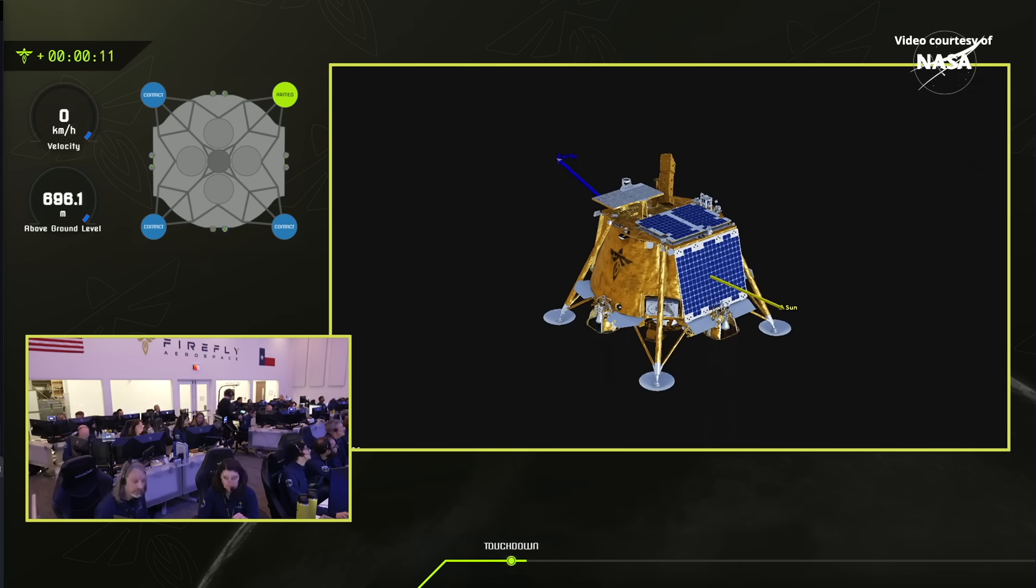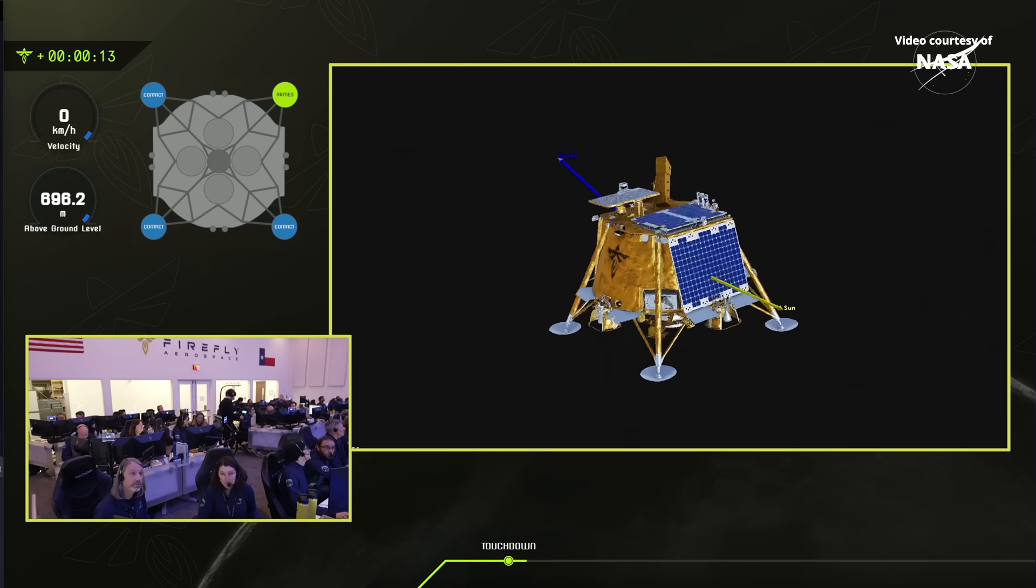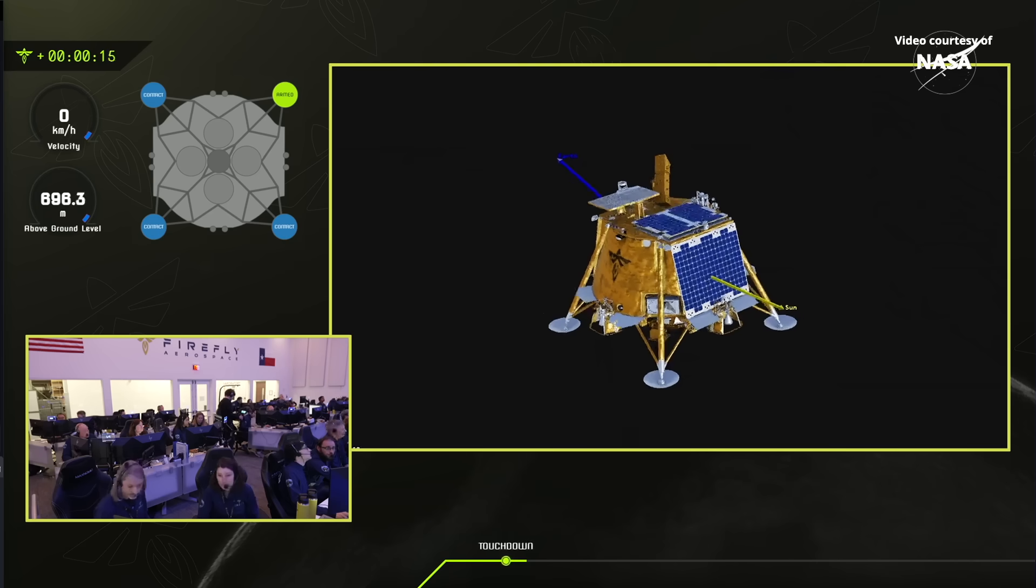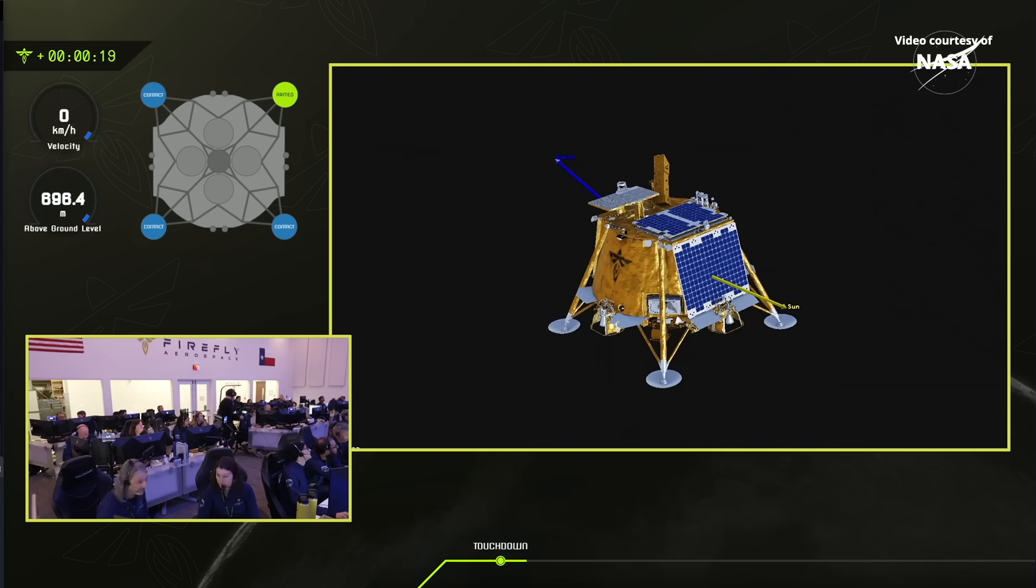Vehicle at shutdown. Three contact sensors tripped. Engine shutdown confirmed. Our nominal vehicle is charging. IMU reports lunar gravity and it is stable.